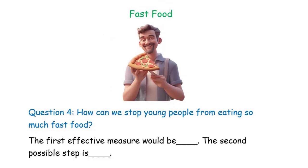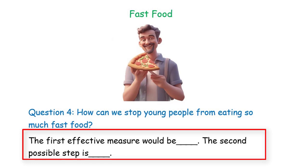Now let's analyze question 4. How can we stop young people from eating so much fast food? Addressing solutions to reduce fast food consumption among young people requires proposing practical measures. The first effective measure would be to promote healthy eating habits through education campaigns in schools and communities. The second possible step is to implement policies restricting the marketing and availability of fast food near schools and in public spaces frequented by young people.